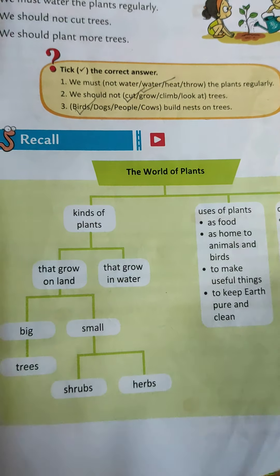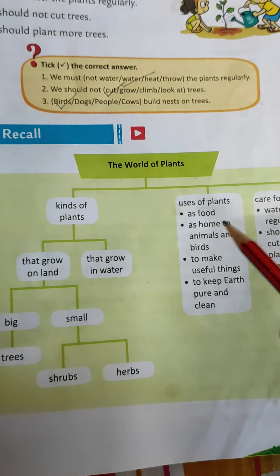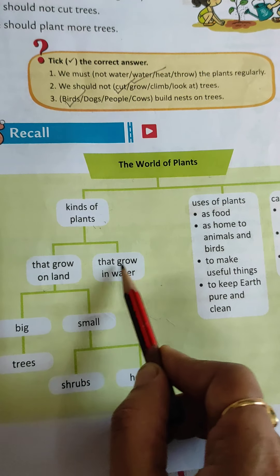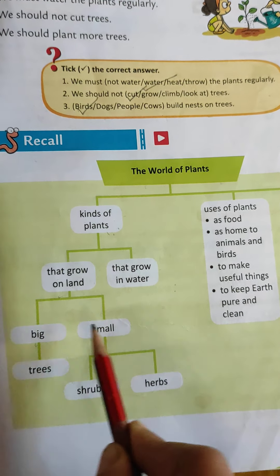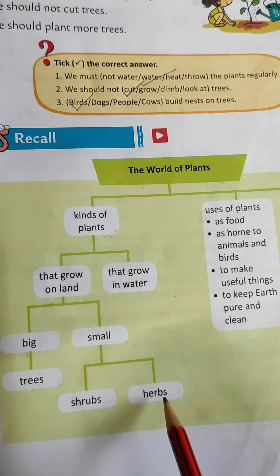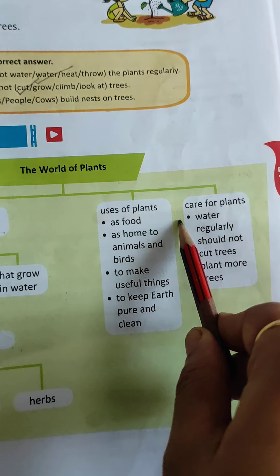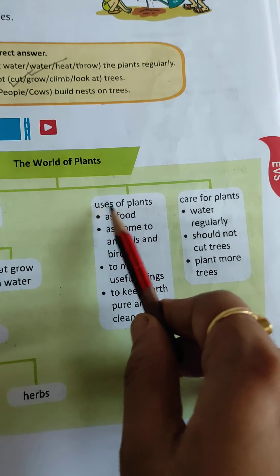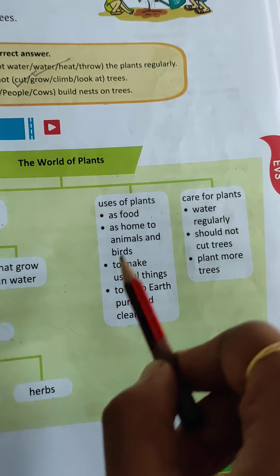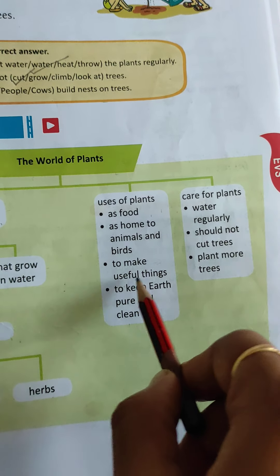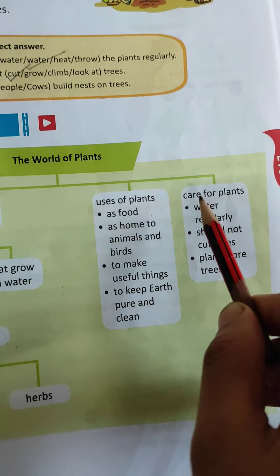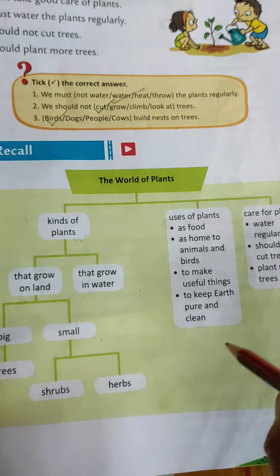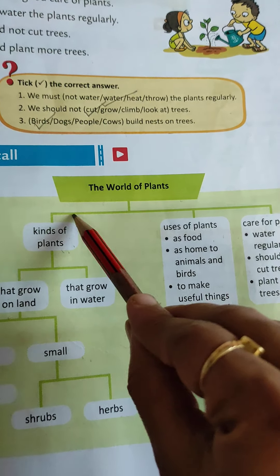Now let's recall chapter number 7, The World of Plants. We learned about kinds of plants — plants that grow on land and plants that grow in water. Land plants can be big or small; big plants are called trees and small plants are called shrubs and herbs. We also learned the uses of plants and how plants are used to make useful things, how plants keep the earth pure and clean, and how to take care of plants by watering regularly, not cutting trees, and planting more trees.